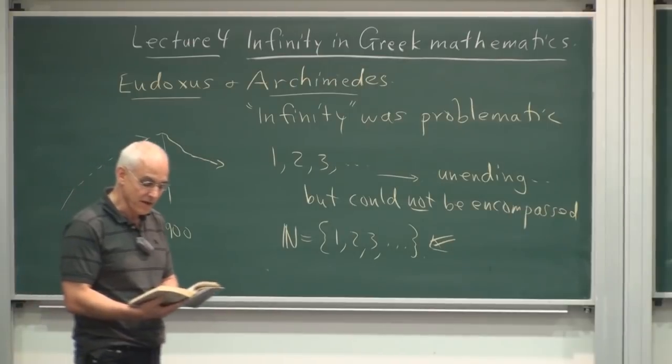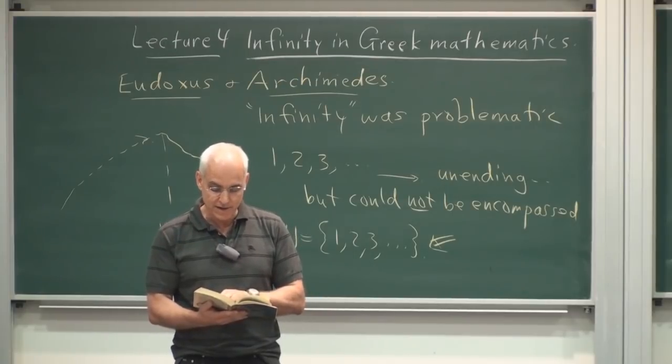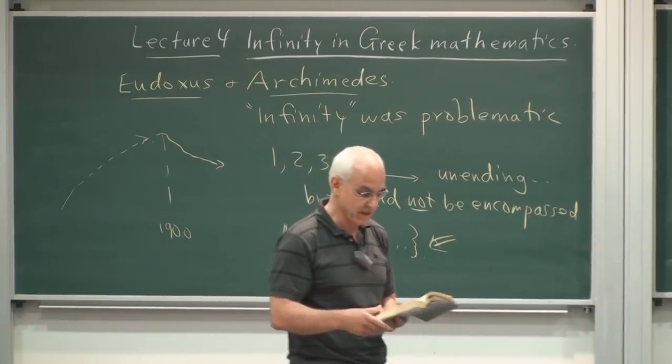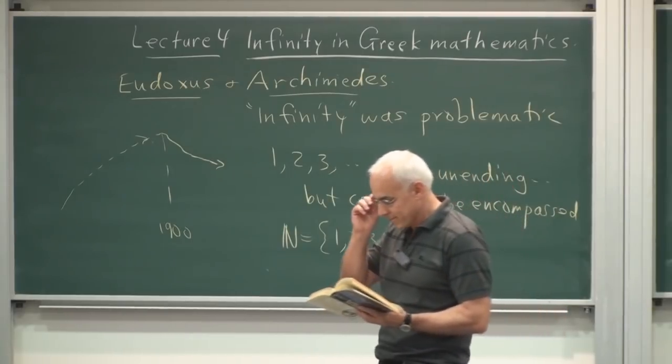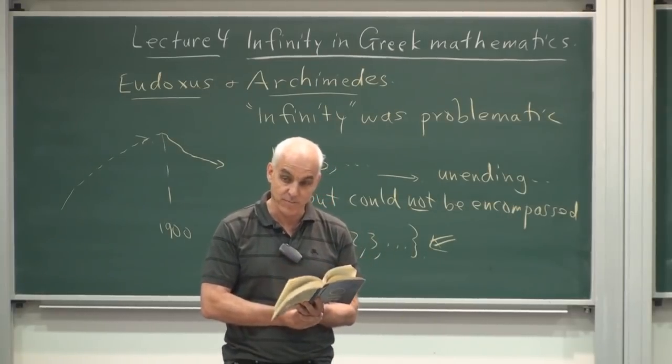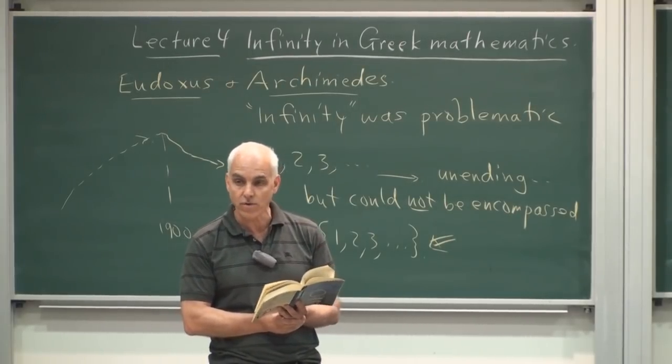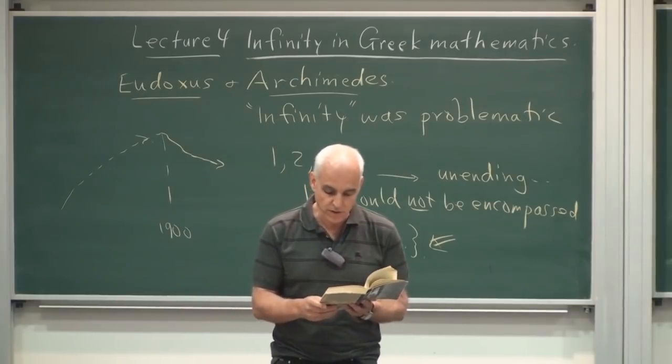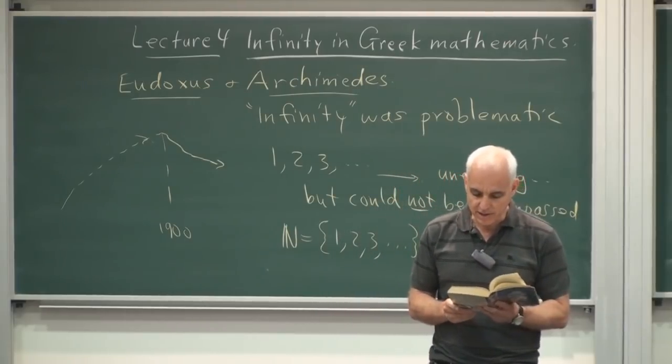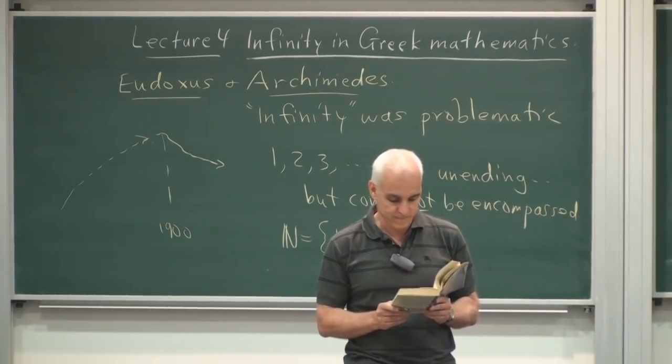Here is the beginning of the book on the sphere and cylinder, where Archimedes greets a fellow mathematician, perhaps he was writing to someone whose name was Dossithius. On a former occasion, I sent you the investigations which I had up to that time completed, including the proofs. Since then, certain theorems not hitherto demonstrated have occurred to me, and I have worked out the proofs of them.